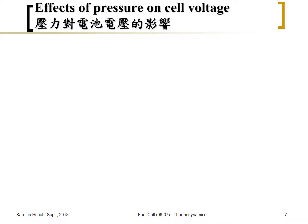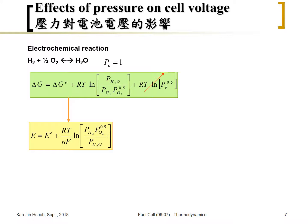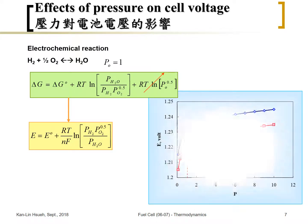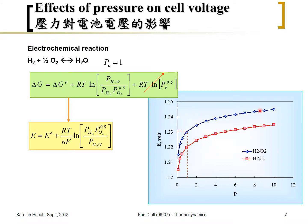We can plot the cell voltage as a function of pressure. This curve is for hydrogen with pure oxygen, and this one is for hydrogen with air. You can see that the hydrogen-air case is closer to reality for fuel cells. At low pressure, the cell voltage increases much faster than at high pressure, where the cell voltage increases more slowly as pressure goes up.